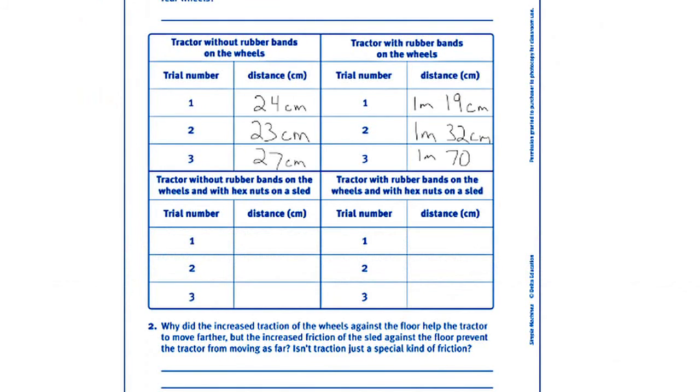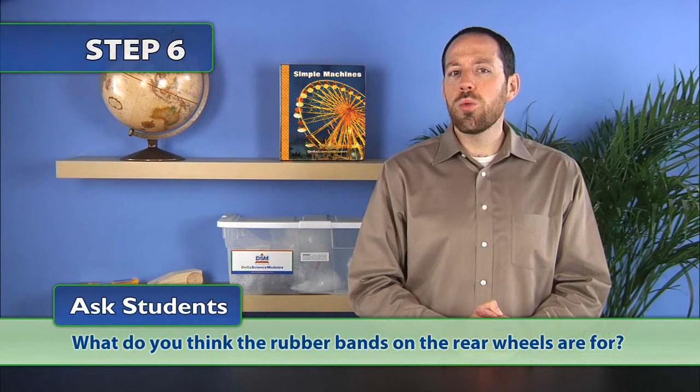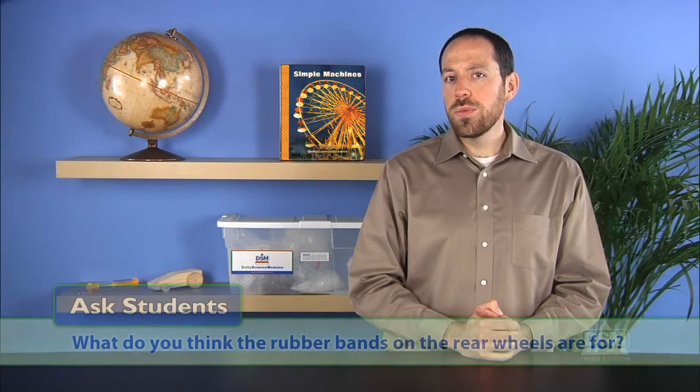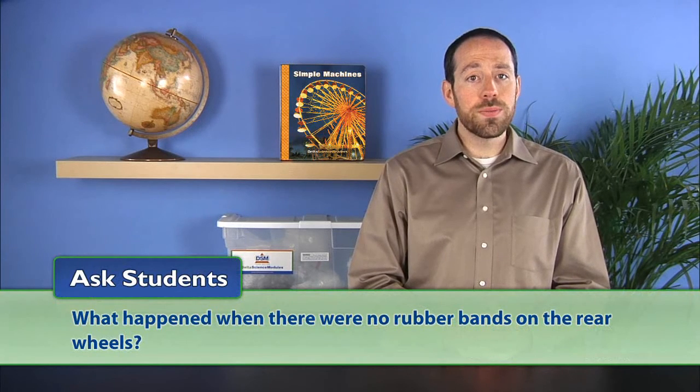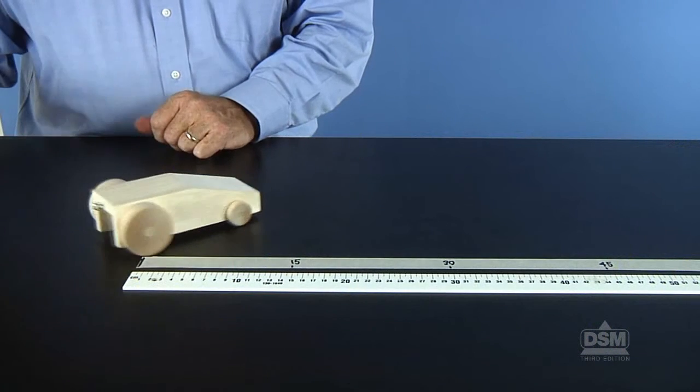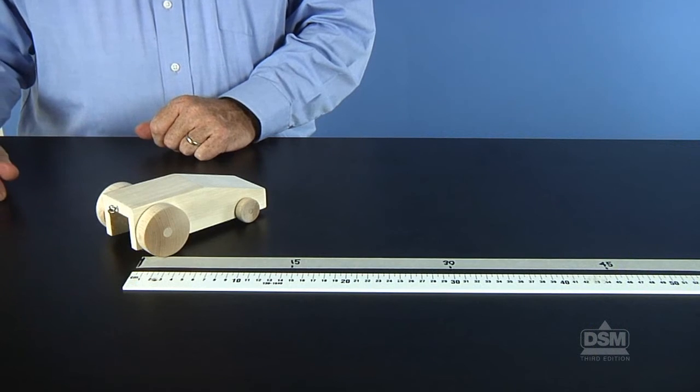Ask students, what do you think the rubber bands on the rear wheels are for? Students should conclude that the rubber bands help the wheels stick to the floor as the wheels turn. Then ask, what happened when there were no rubber bands on the rear wheels? Students should understand that without the rubber bands, the bare wheels spun on the floor so that even though the wheels had the same force to power them, the tractor did not go as far.